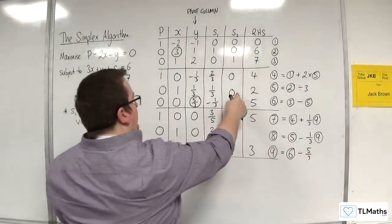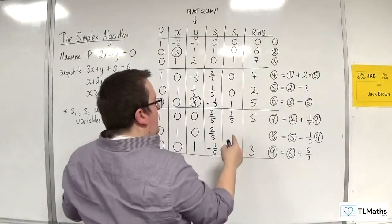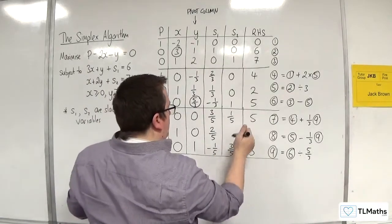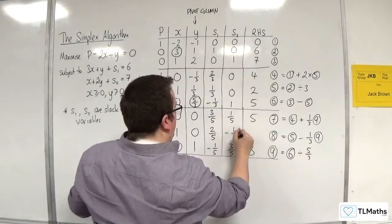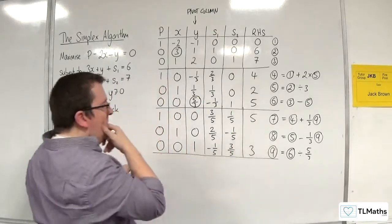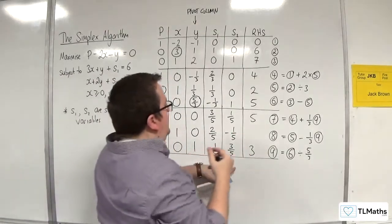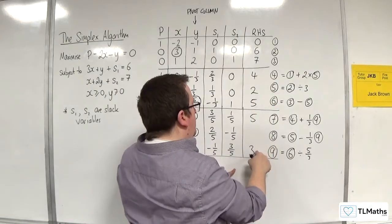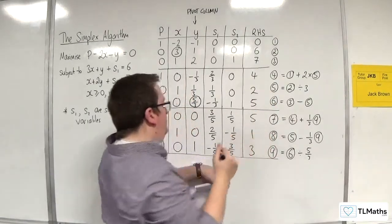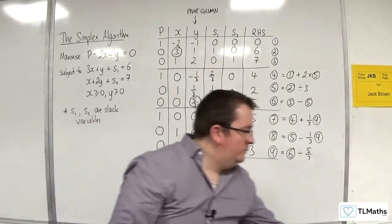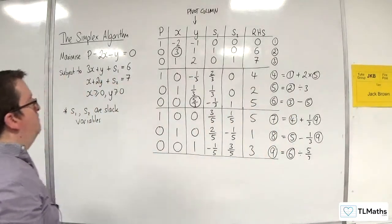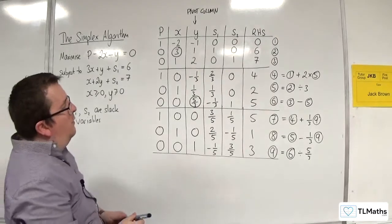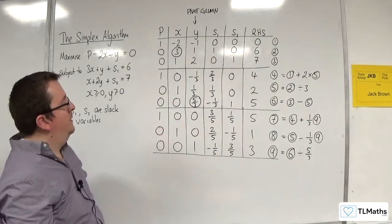Then I've got 0 take away a third of 3 fifths. So minus 1 fifth. And then 2 take away a third of 3 is going to be 1. So this is what my second iteration looks like.